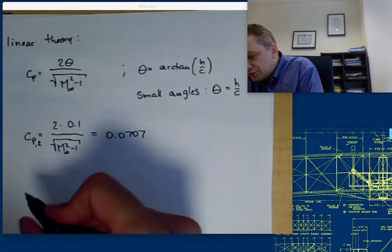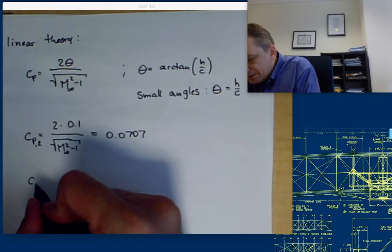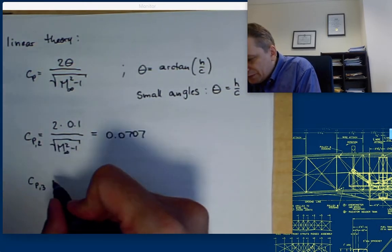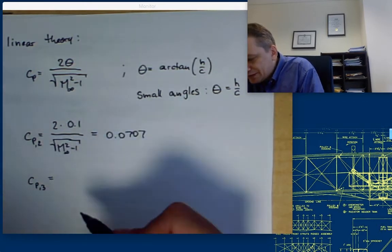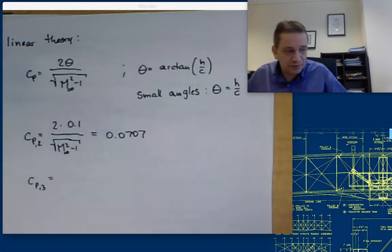So with that we have now the first pressure coefficient. This is for section 2. Cp3 for the upper and lower sides are going to be identical.